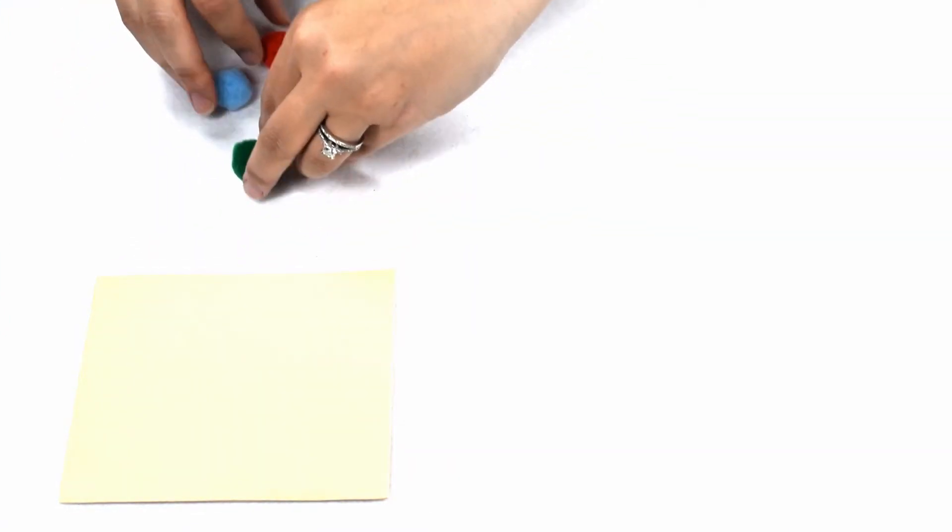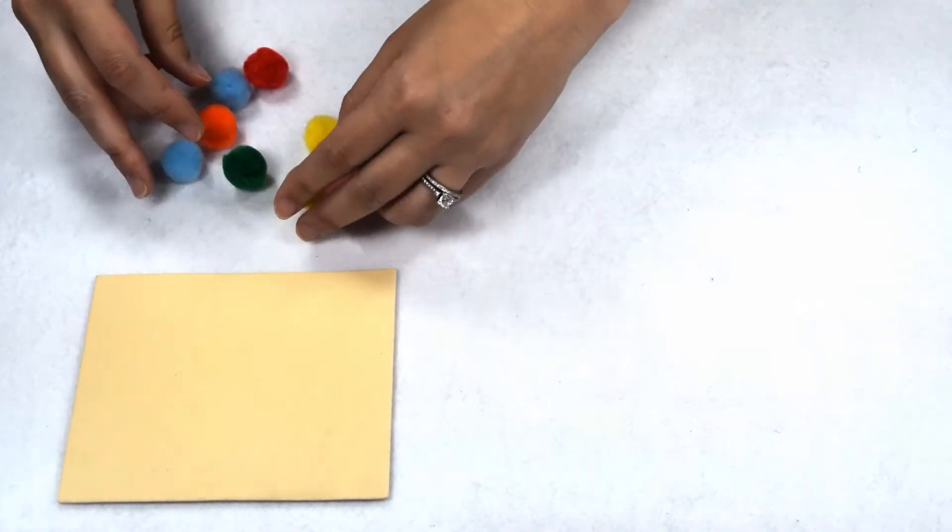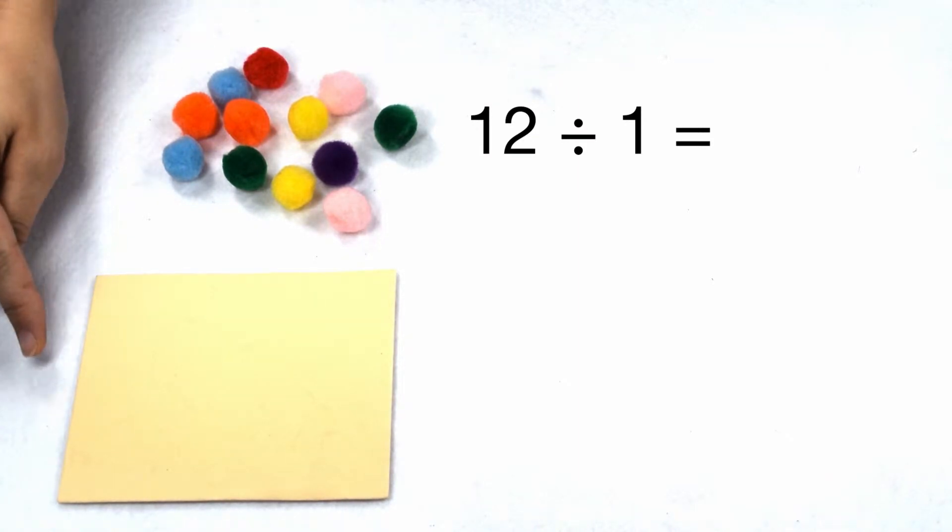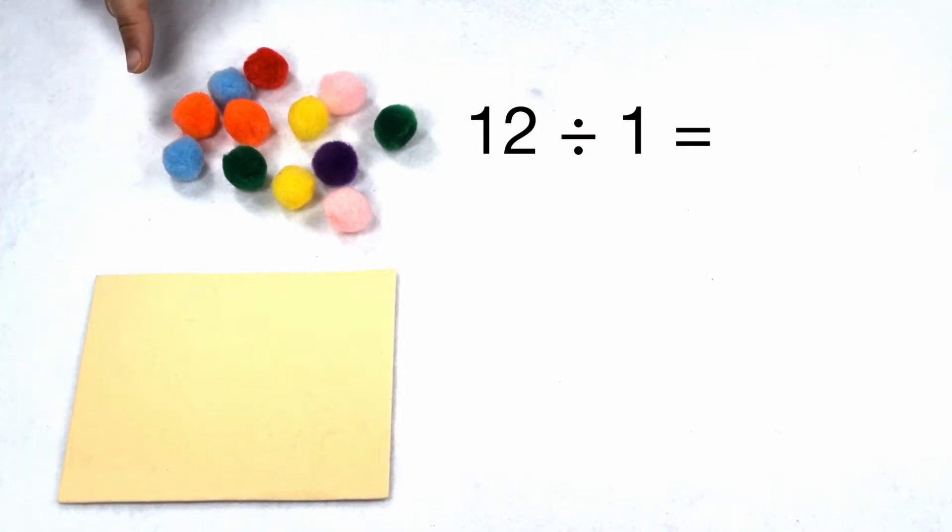Let's see what happens if we have a larger dividend. What if I have 12 items? So 12 would be my dividend and I still want to put them in one group. So one is my divisor. That means I'm solving 12 divided by one.